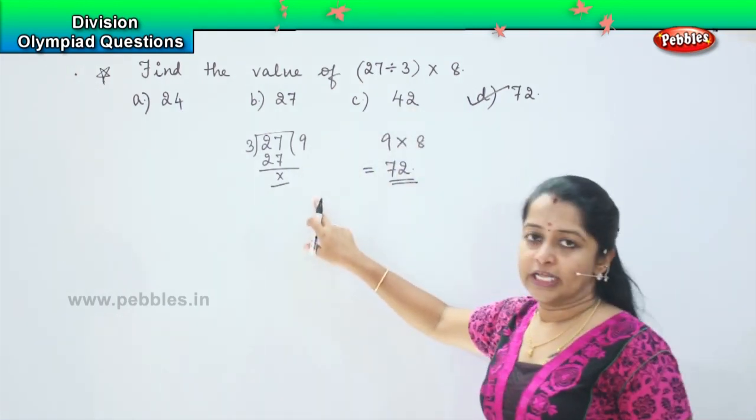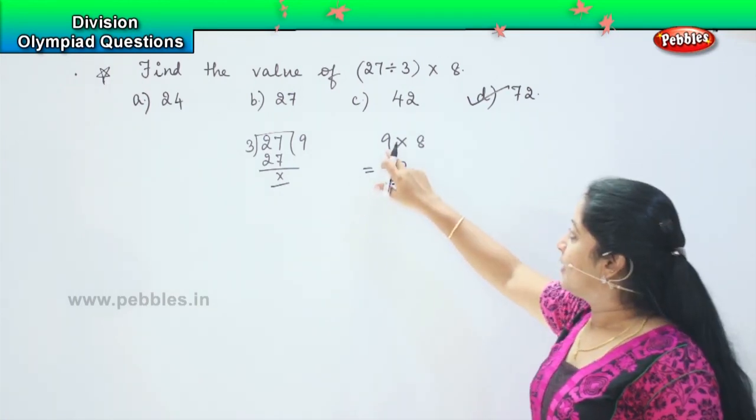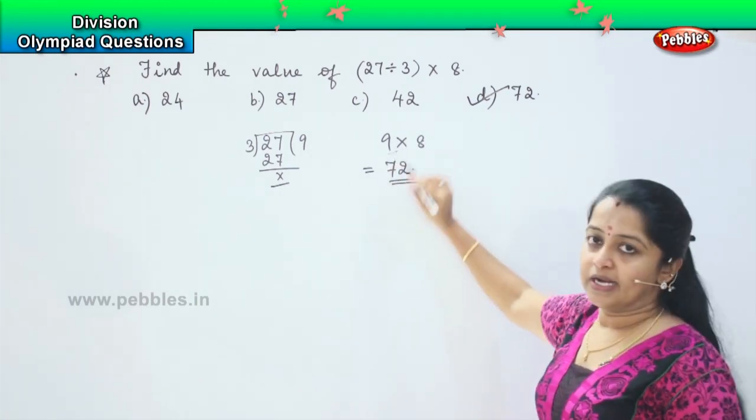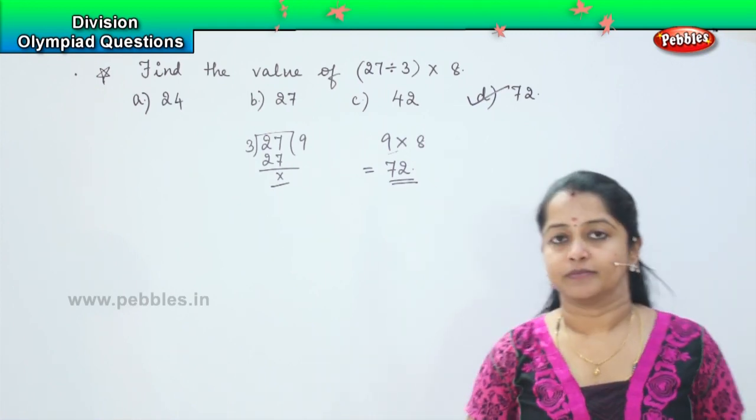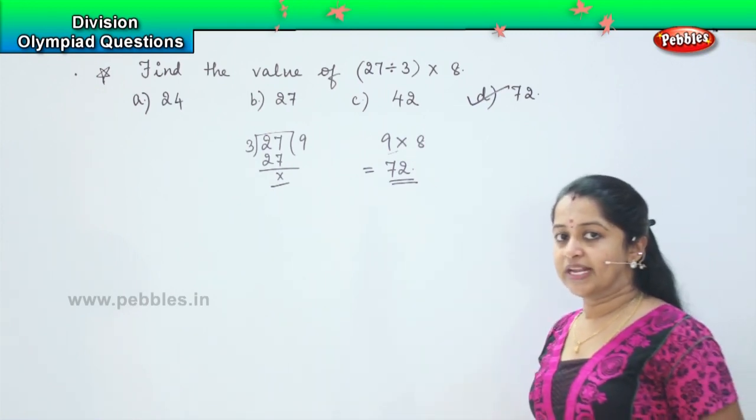So first we have done the division part. After that from the answer which we have obtained we have multiplied into 8 to get the final answer. Clear? Shall we move to the next one?